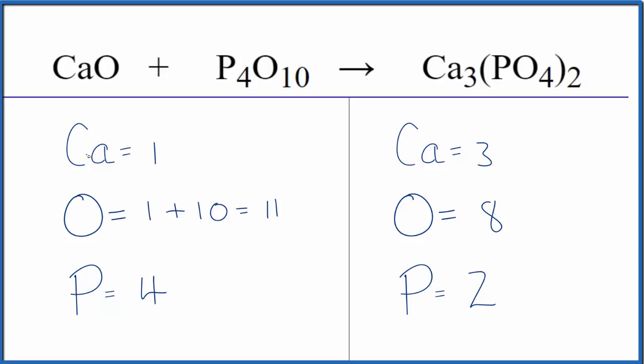I could balance the calcium or the phosphorus — I like to leave oxygen until last. I'll balance the phosphorus first, because when I put a two here, that'll change my calciums around.